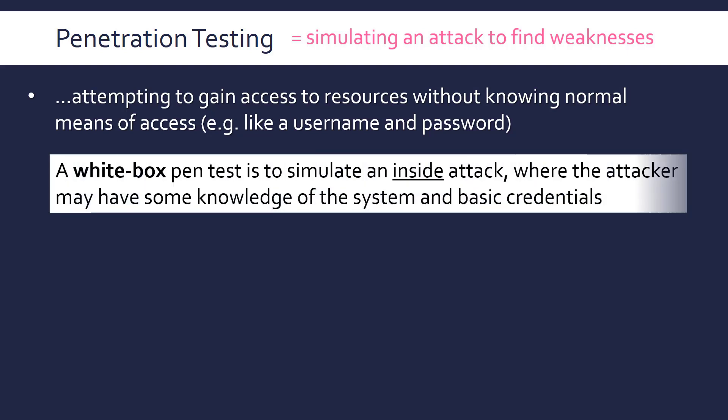There are two types of pen tests. A white box pen test simulates an inside attack where the attacker may have some knowledge of the system and may have basic credentials. So you might have a basic username and password, and then there's an administrator account or a database you're not meant to access. Normal employees won't be able to access it, but you have some knowledge of how it works, so you're pretending you're an employee of the company.